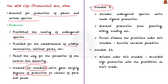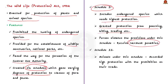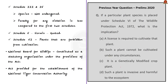The first schedule includes endangered species which need the highest protection. If a species is included in Schedule 1, it is granted protection from poaching, killing, trapping, etc. If a person violates the provisions under this schedule, he or she will receive the harshest penalties. Coming to Schedule 2, similar to Schedule 1, animals under this schedule are also accorded high protection with prohibition on their trade. When we move to Schedules 3 and 4, these include species that are not endangered and inclusion of a species in these schedules offers protection, but the penalty for any violation is less compared to the first two schedules.